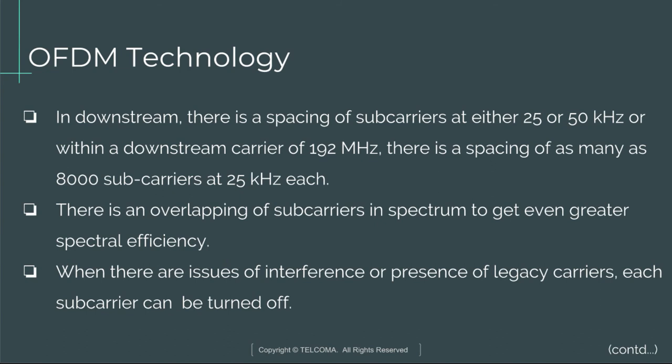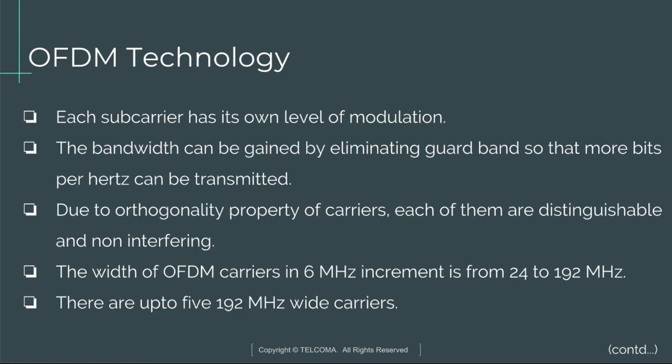Sub-carriers overlap in the spectrum to achieve greater spectral efficiency. When there are issues of interference or presence of legacy carriers, each sub-carrier can be turned off individually. Each sub-carrier has its own level of modulation. Bandwidth is gained by eliminating guardbands so that more bits per Hz can be transmitted. Due to the orthogonality property of carriers, each is distinguishable and non-interfering. OFDM carriers range in width from 24 to 192 MHz in 6 MHz increments.